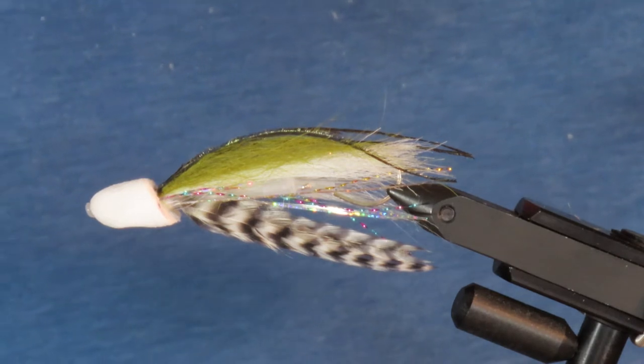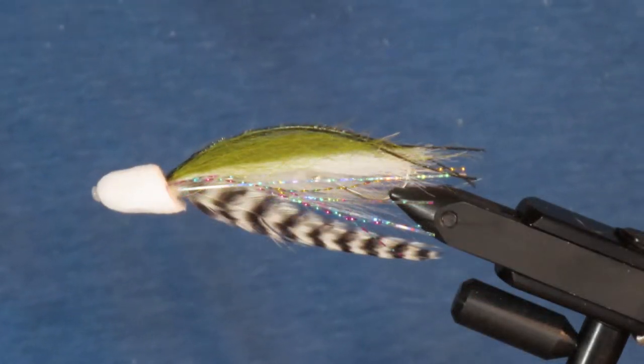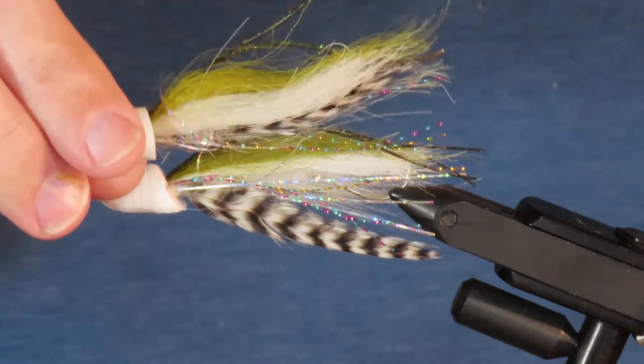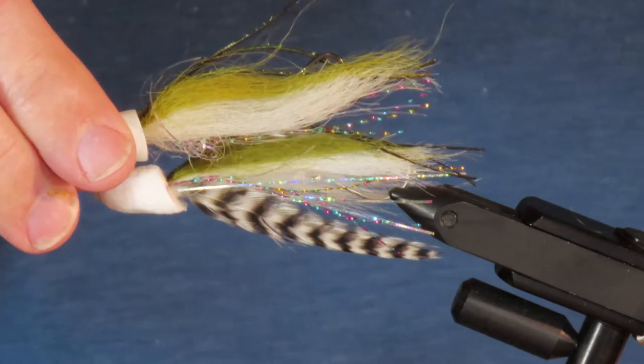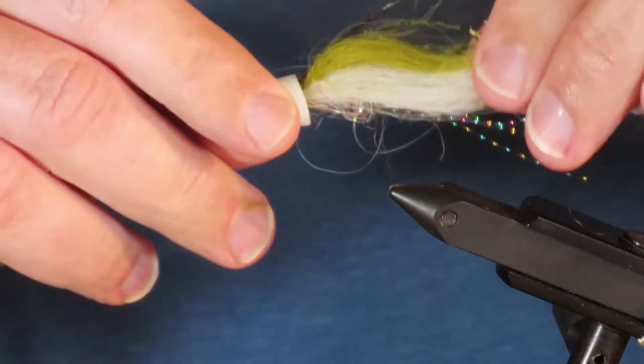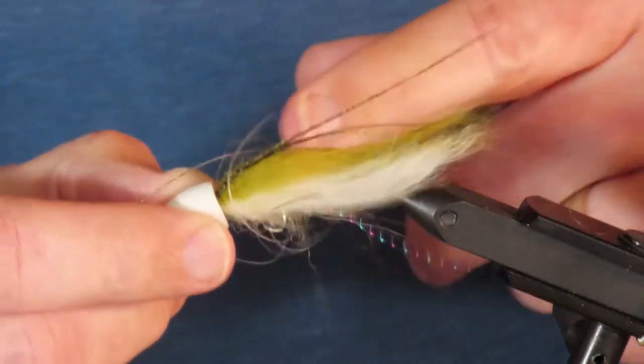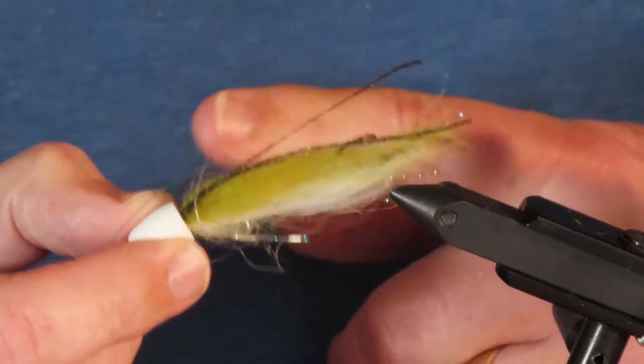This is a pattern that's pretty much unbeatable in getting the attention of coastal cutthroat on our saltwater beaches, but it does suffer the drawback of being really difficult to get hookups. As it's usually tied, the front end is built on a hook shank and the business end has a stinger hook held in place with a loop of thick monofilament. The connection is pretty flexible, and a fish that's aggressively grabbing this fly is likely to just deflect that hook and not be impaled on it.